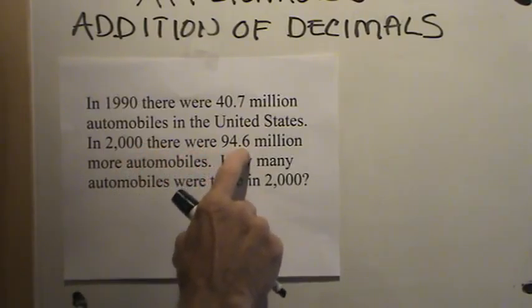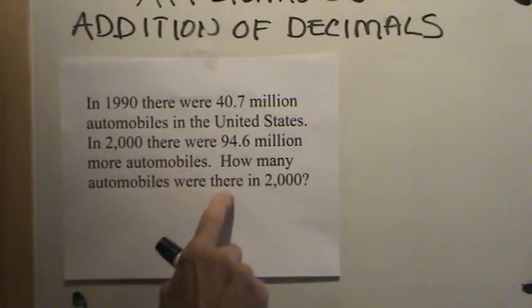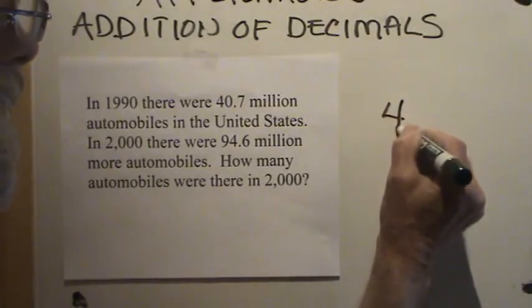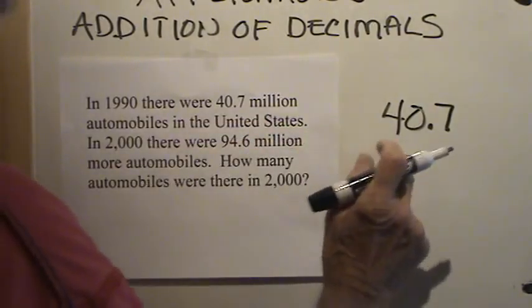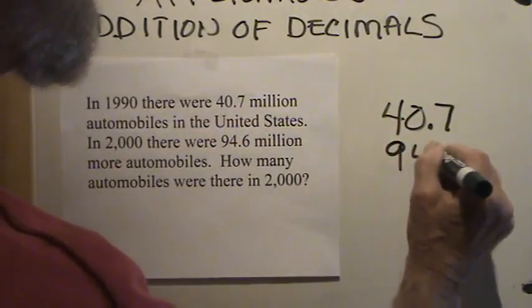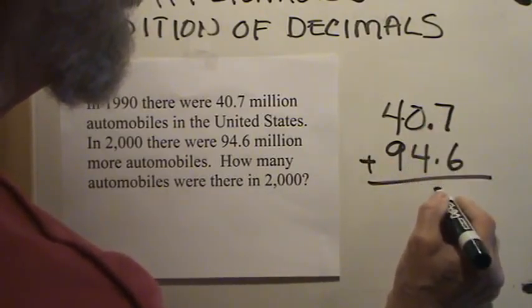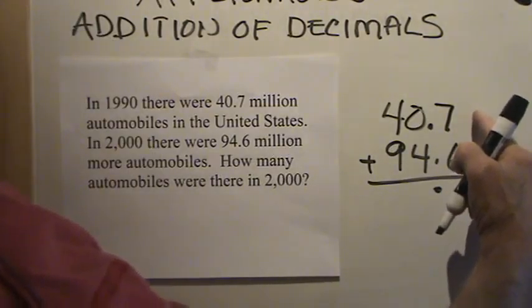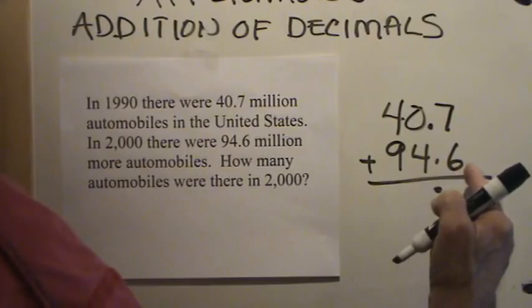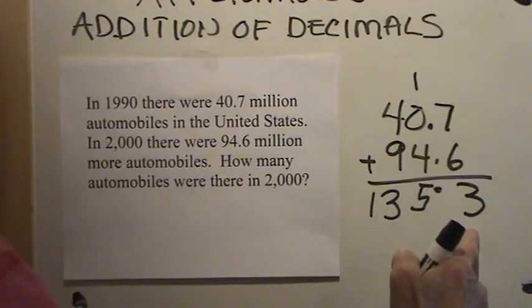I'm going to put a couple of problems up for you. We'll read them and then I'll ask you to put the video on pause and work the problem, then turn it back on again. In 1990, there were 40 and 7-tenths million automobiles in the United States. In 2000, there were 94 and 6-tenths million more automobiles. How many automobiles were there in 2000?